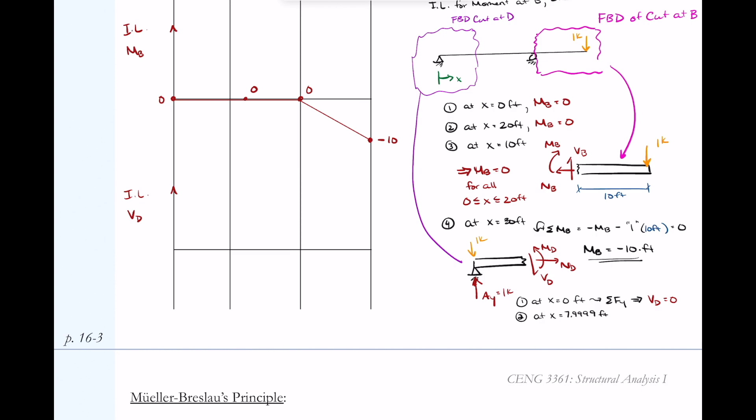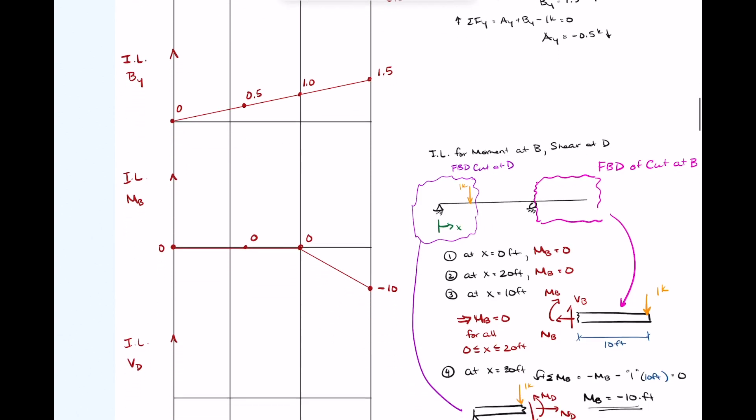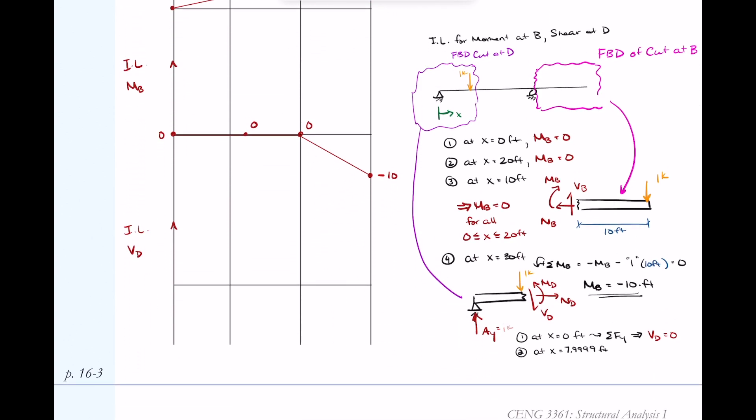I'm now going to move the one kip load directly before point D, at x equals 7.99999 feet, right before the cut. In this case, the load is still on my free body diagram. When I move it over there, I need to consider what AY is. From my influence line for the reaction at AY, I'm going to solve for the value at point D. You can do a similar triangle to solve this. In this case, I found that it was 0.6. So if AY is 0.6 and I have the one kip down, I can sum forces in the Y direction and solve for shear at D. The shear at D would need to be negative 0.4 kips. It has to be negative because it's opposite the way I drew it. I need 0.6 and then the negative 0.4 would actually be upward to counteract the one downward.